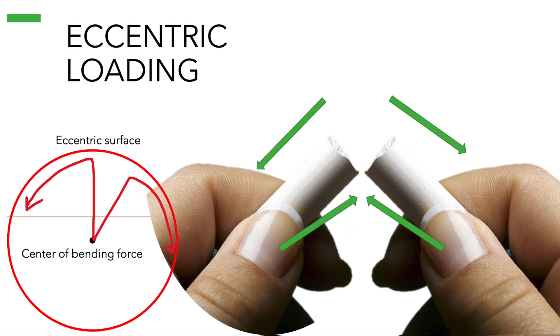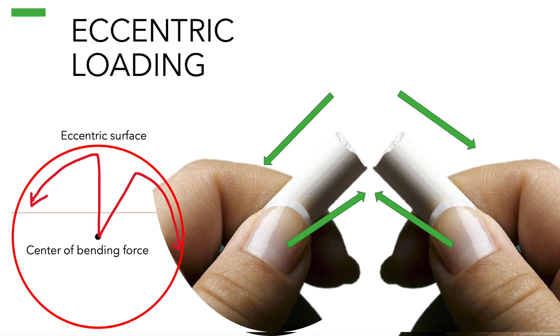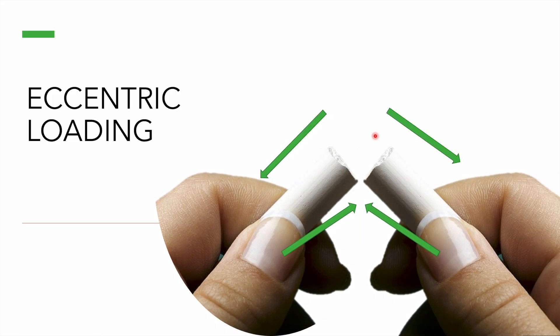The surface that is away from the bending direction — on which tension is applied — brings distraction on the outer surface; this is the tensile surface. When forces are compressing on one side and distracting on the other, this is known as eccentric loading.